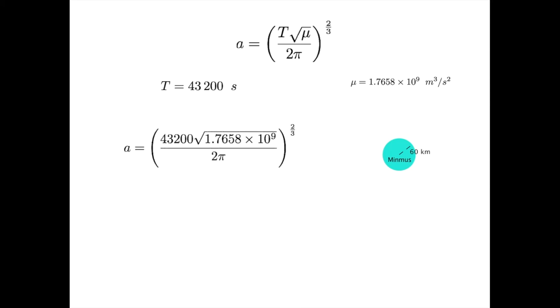We substitute in, along with the standard gravitational parameter for Minmus, get out our calculator to get 437,035 meters. Minmus has an equatorial radius of 60,000 meters, so we subtract that off to get an altitude of about 377 kilometers. So this is the final orbit that we want for our satellites.